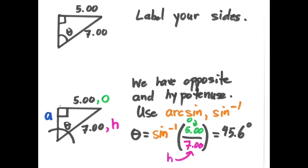The last triangle we're going to look at is one where, when we label it, we only have the opposite and the hypotenuse. In this case we use the arc sine to find the angle. The arc sine of the opposite divided by the hypotenuse — arc sine of five divided by seven — gives us an angle of 45.6 degrees.